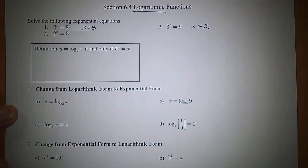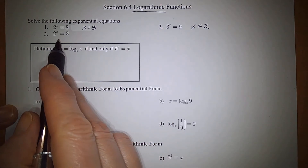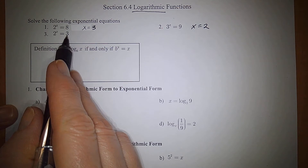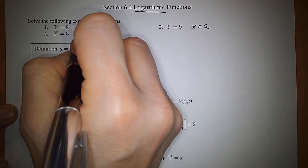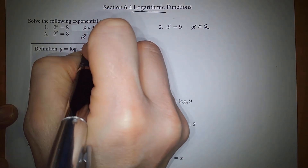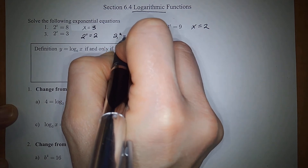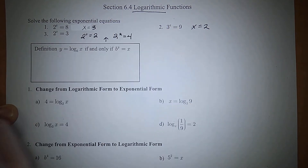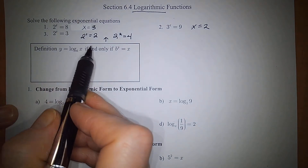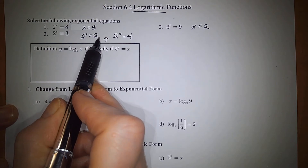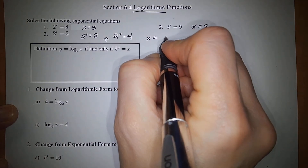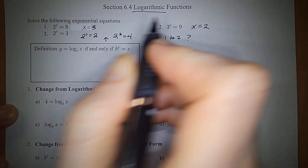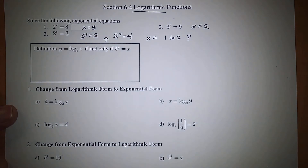However, how would we answer something like 2 to the what power is 3? There is no integer I could plug in for x. I know 2 to the first power is 2 and 2 to the second power is 4, but what in between will give me 3? Clearly my exponent needs to be some number between 1 and 2 — but what exactly would x need to be?